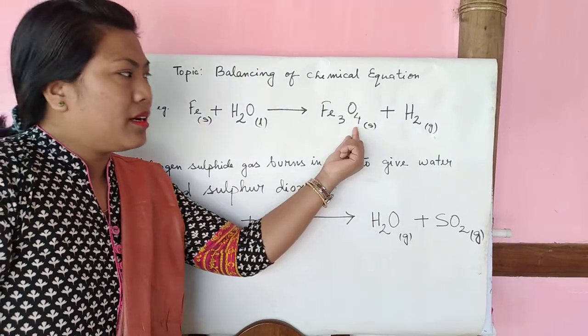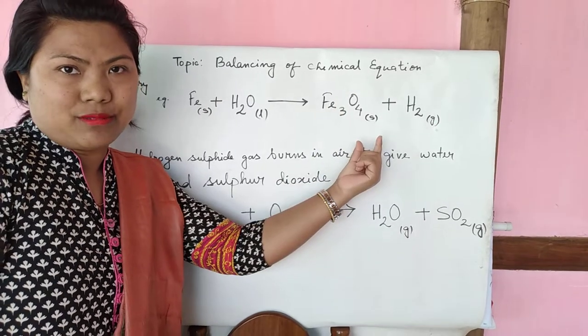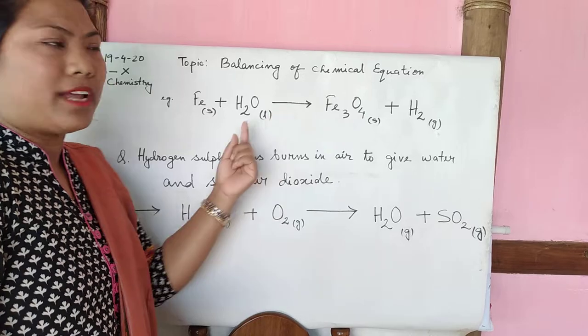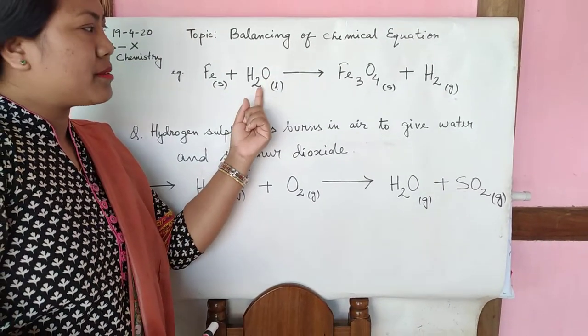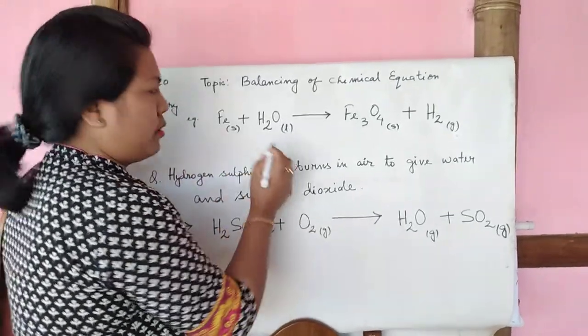Then on the product side, that is on the right hand side, you can also call this side as right hand side for your easiness. Right hand side oxygen is 4 and on the left hand side oxygen is 1. So make it balanced by putting what number? 4.